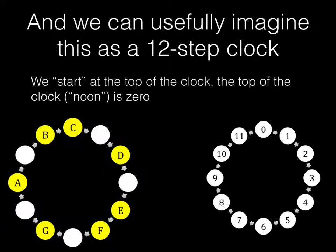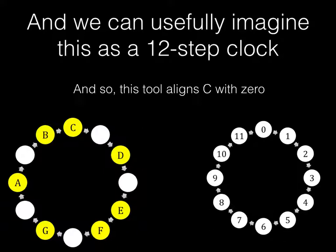So we start at the top of the clock, and this would be 0. But it could also be C, or it could also be scale degree 1. And so this tool is going to align C with 0.